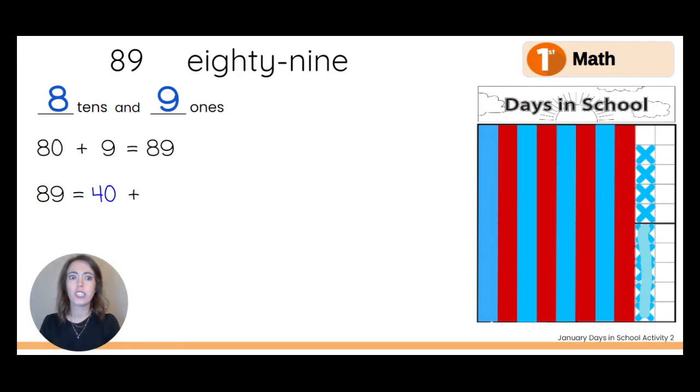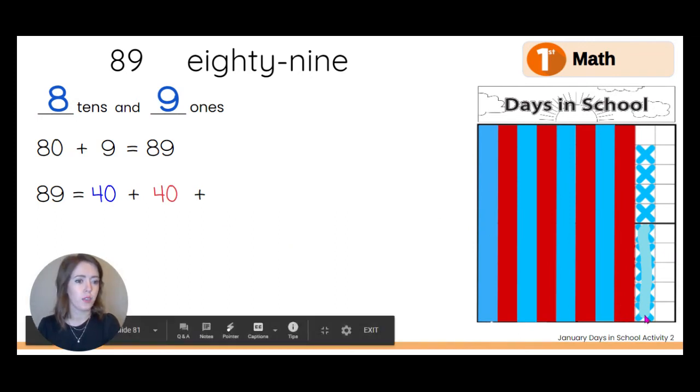And we just said that four tens is 10, 20, 30, 40. So that is 40. So we have 40 plus 40 plus, hmm, there's a little bit more. There are some ones. How many ones? Right here we have five, because that's half of ten. Five, six, seven, eight, nine ones. Great. So there's our next equation.